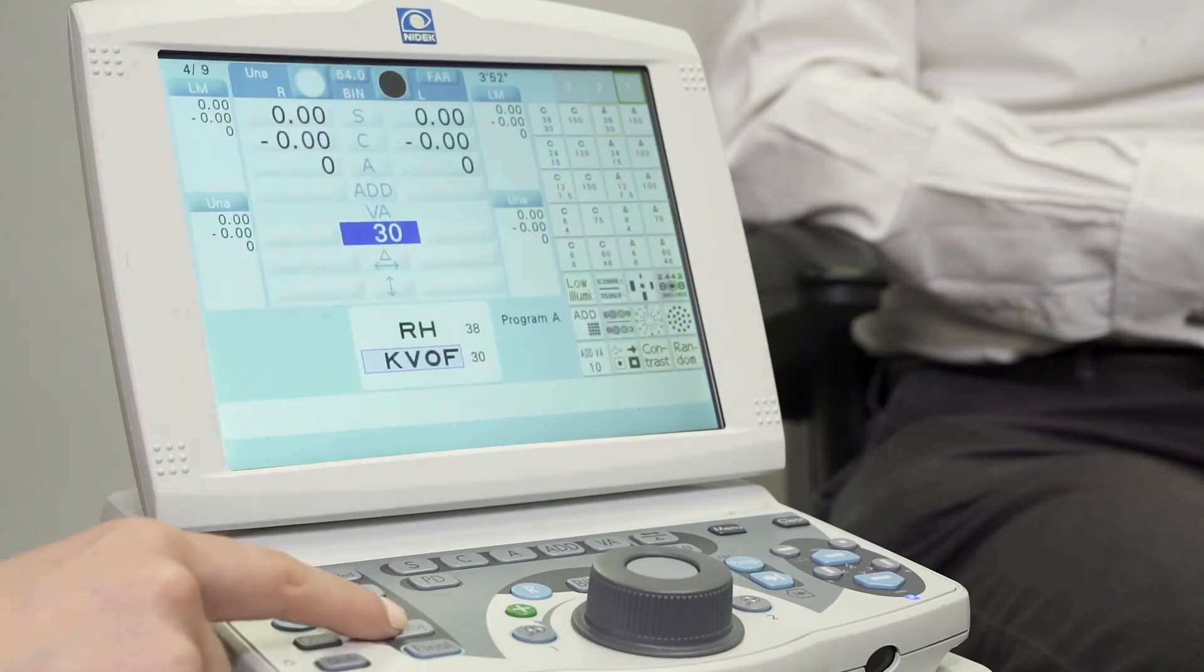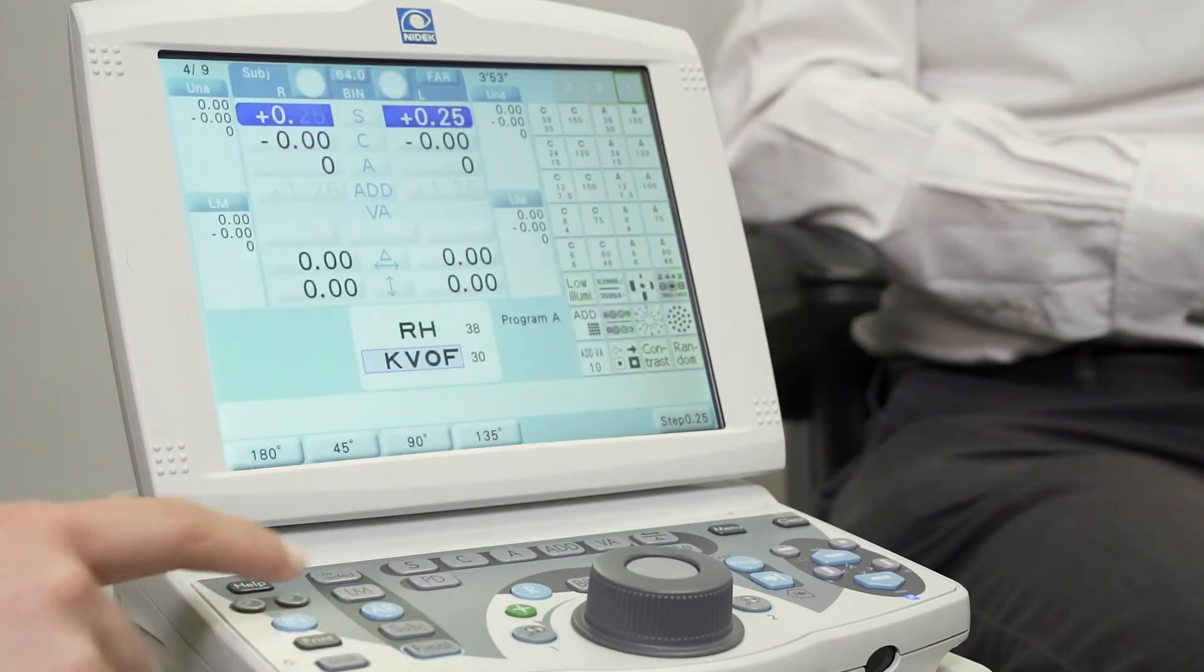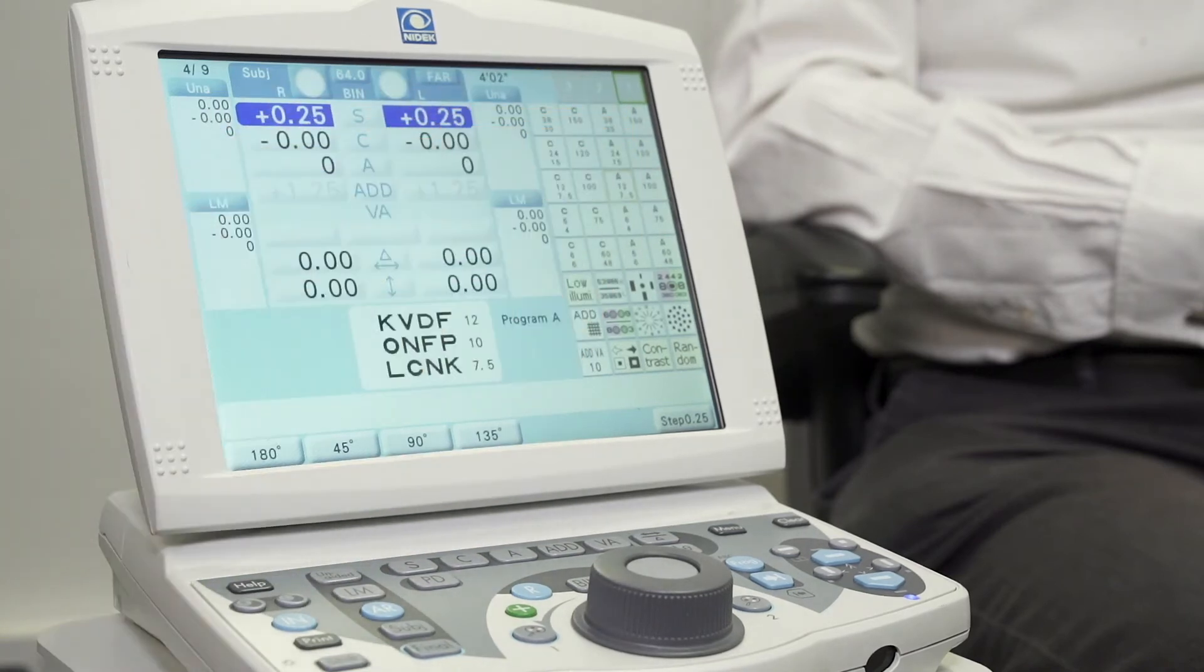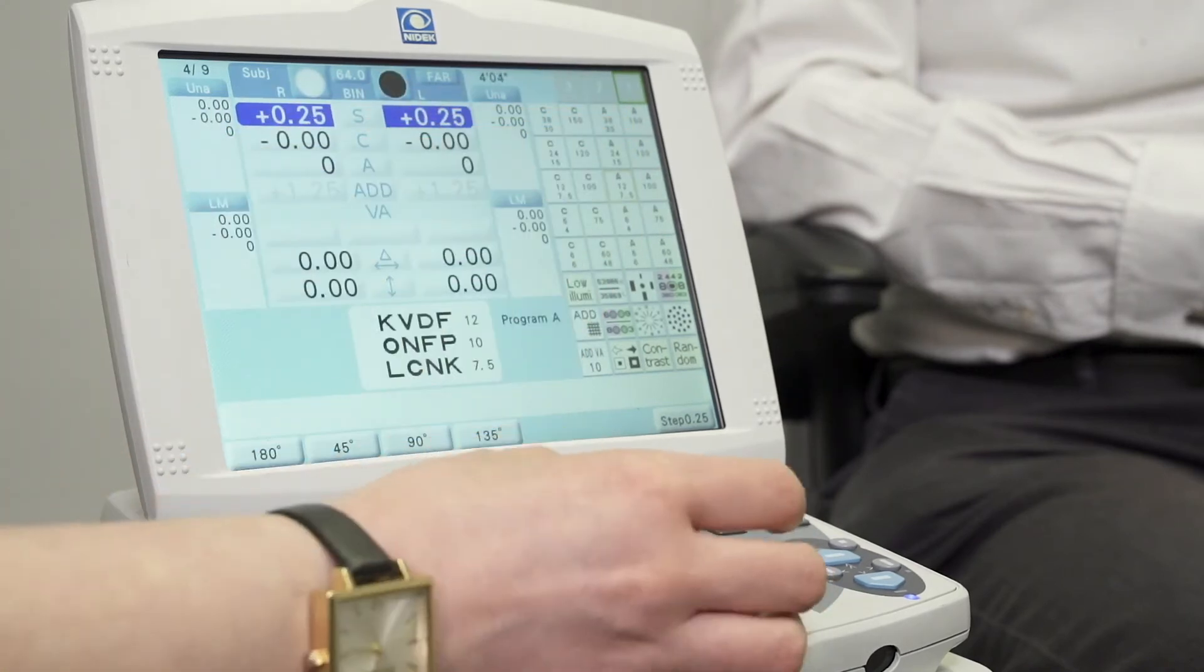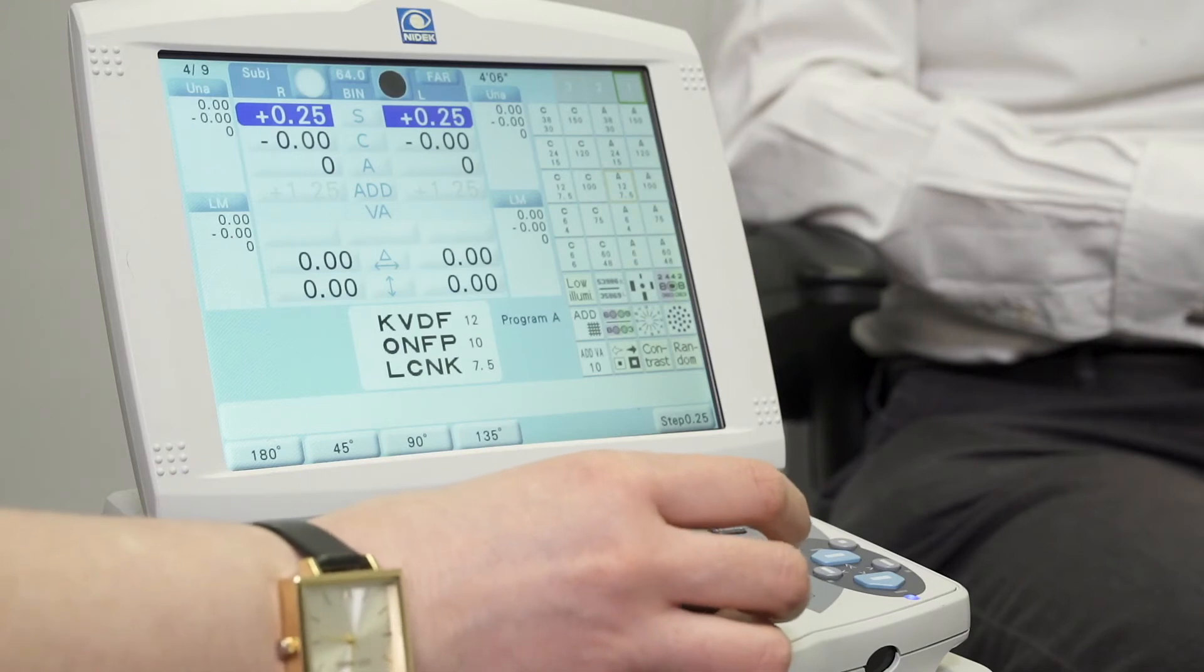Once we're happy there, we can move on to the subjective button. Pressing subjective there, we can start by trying to refine our best vision sphere. We can do that by selecting the smallest letters the patient is able to read and then offering them 0.25 steps with and without and asking which is better.